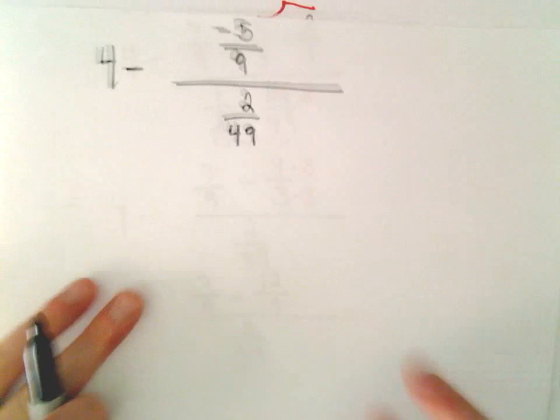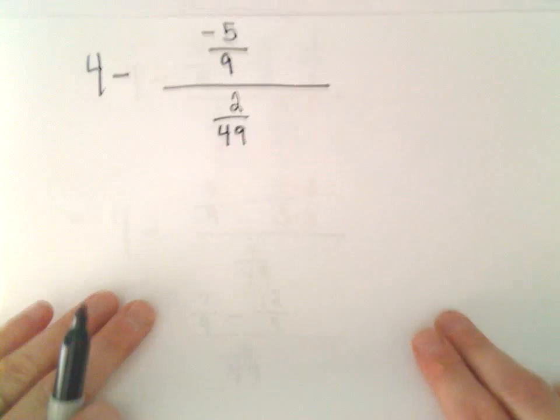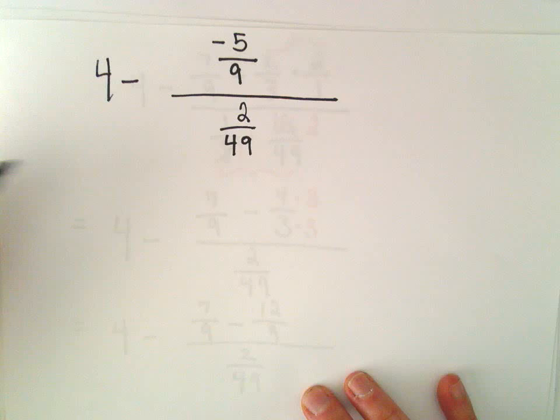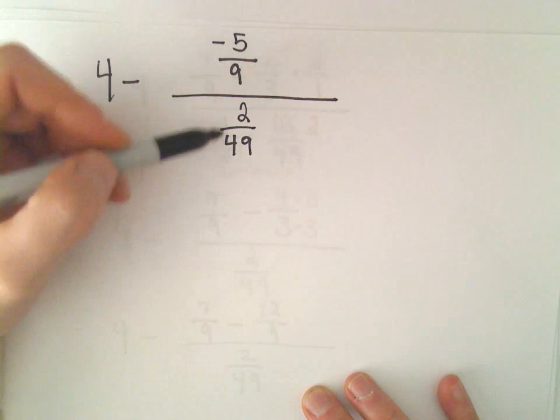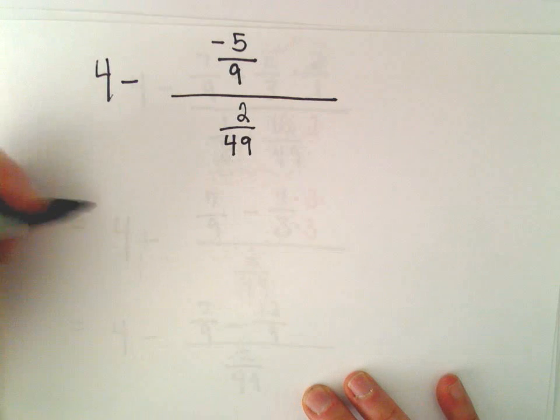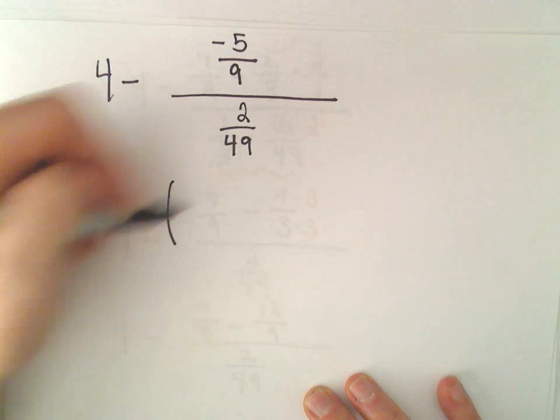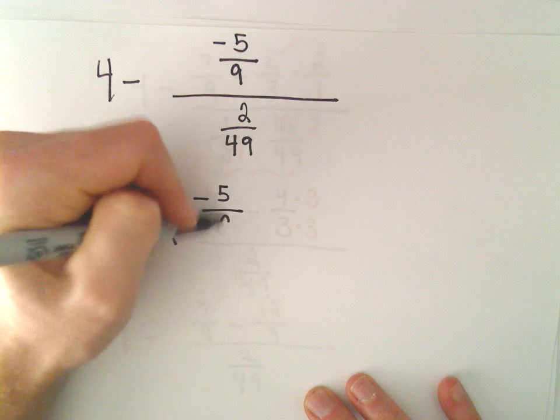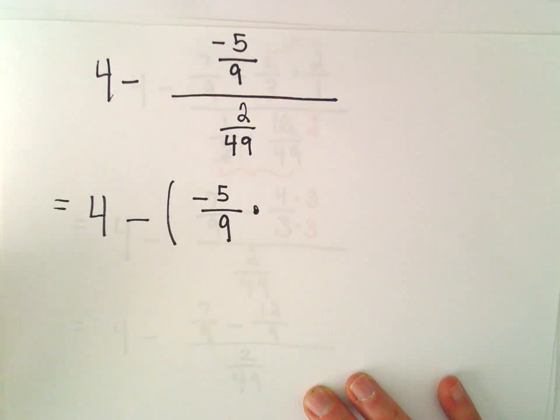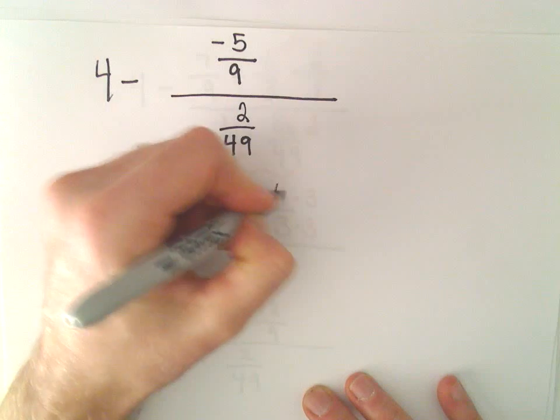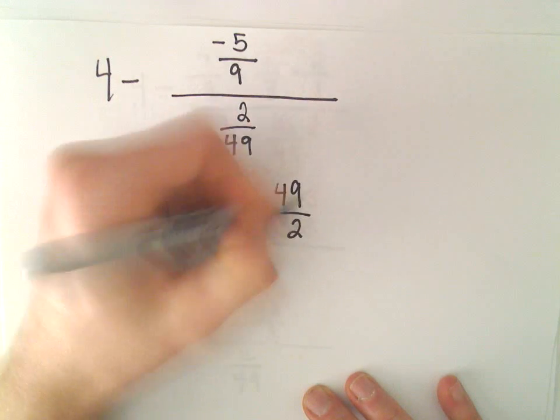All right, so let's clean this up a little bit. So now I think, I'm getting close. I've got 4 minus some fraction divided by some fraction. To do this, we can simply rewrite our division as multiplication. So we have negative 5 ninths, we have to multiply by the reciprocal of the denominator, 49 over 2.